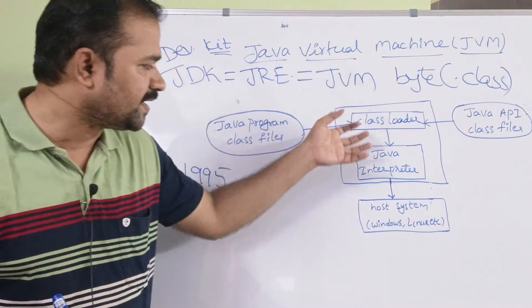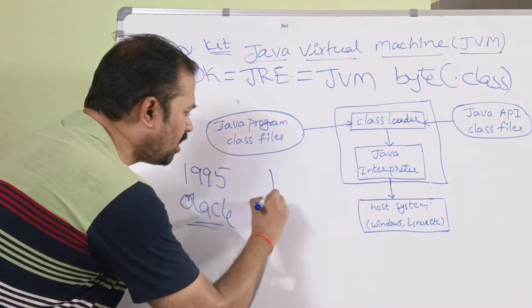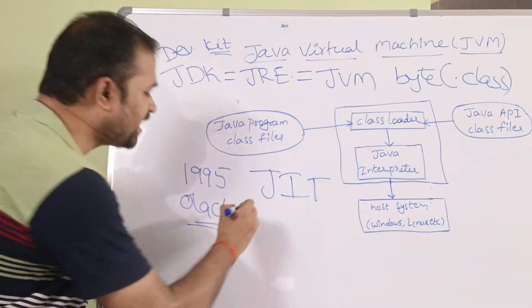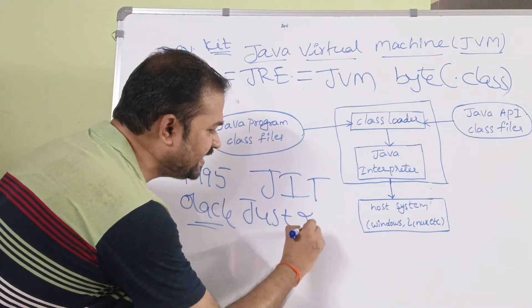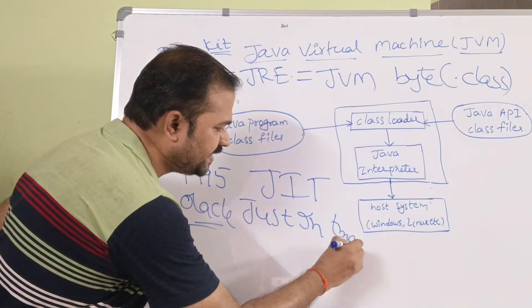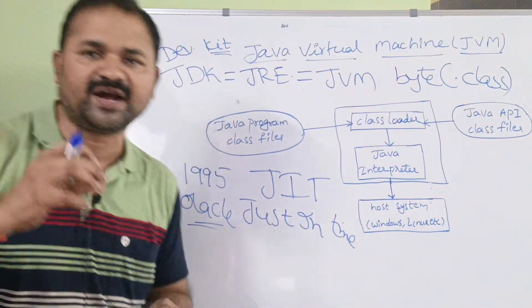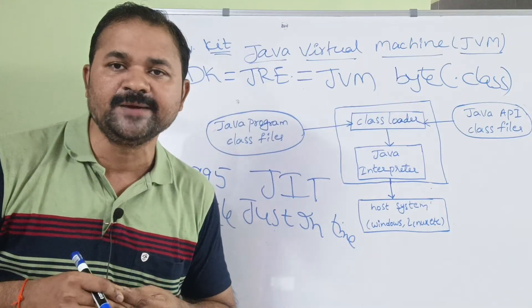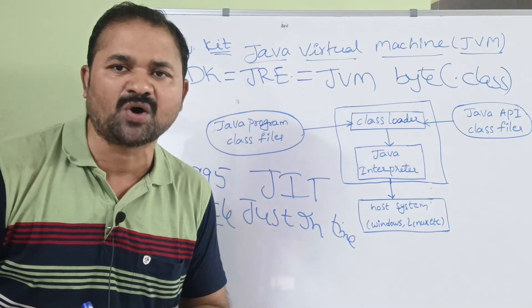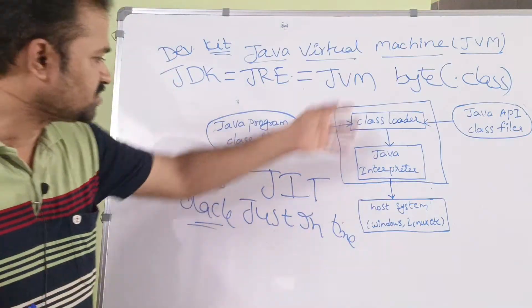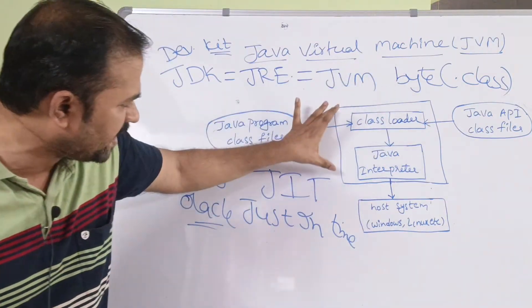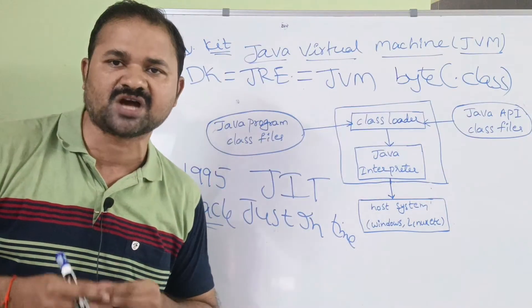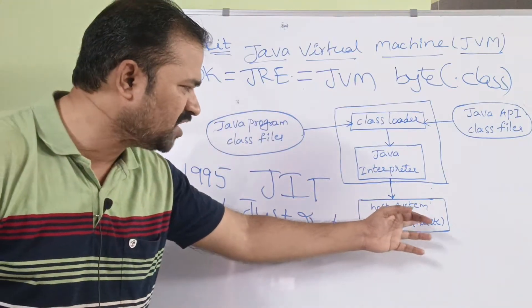Next, we have a compiler called the JIT compiler. JIT stands for Just-In-Time compiler. The JIT compiler works along with JVM in order to improve the performance of our Java programs. So JVM mainly contains the class loader and the Java interpreter.